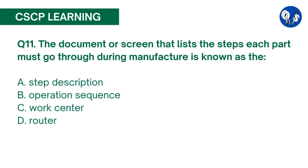Question number 11. The document or screen that lists the steps each part must go through during manufacture is known as the: A. Step Description, B. Operation Sequence, C. Work Center, D. Router. The correct answer is D. The router or routing file lists the steps of manufacture for each manufactured part. Generally, the router includes the work center, the operation sequence in the work center, and the standard amount of time at each sequence step.